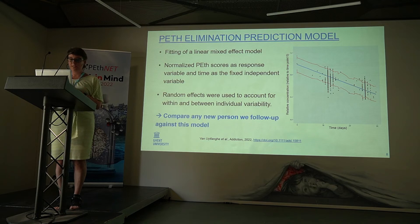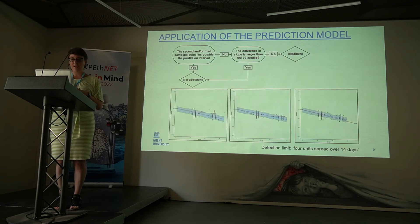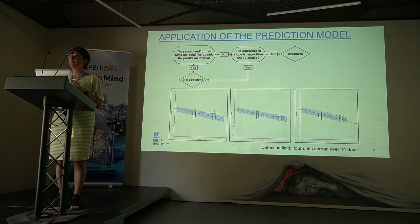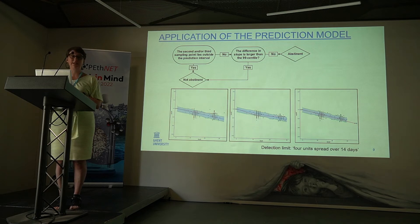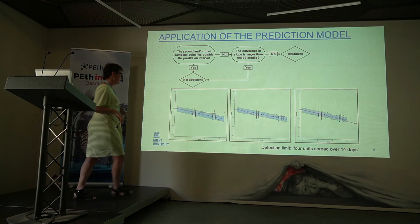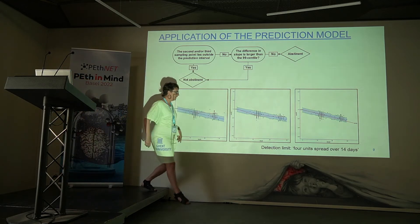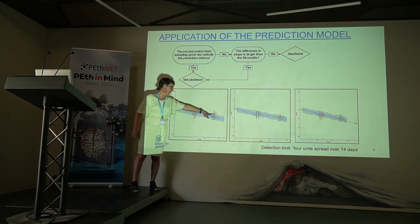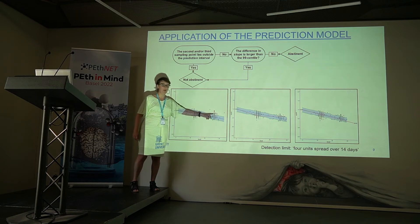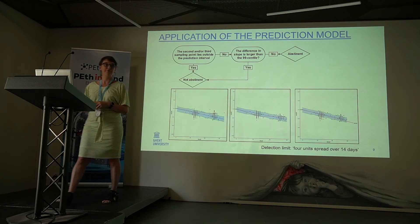We developed this model with the intention to compare any new person we follow up against this model. And then we have a decision tree which looks like this. Basically, what we do is we check the second and the third point. As you can see here, the third point is over the green line. And so, if the third point does not fall below this blue area, we say — I'm sorry, but you have been drinking.